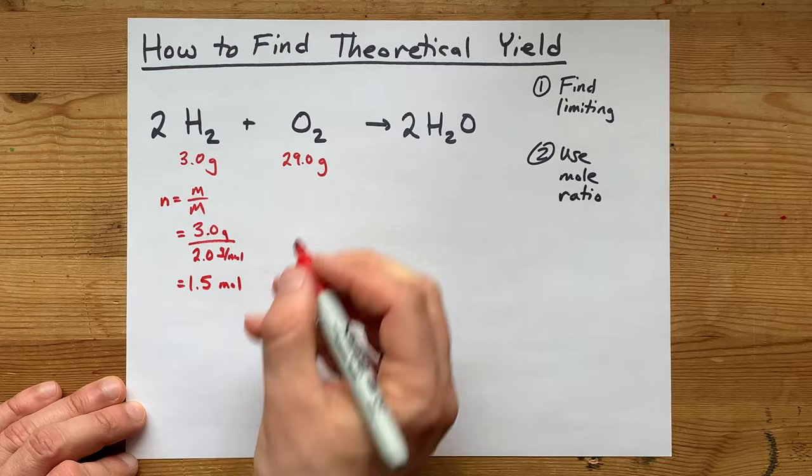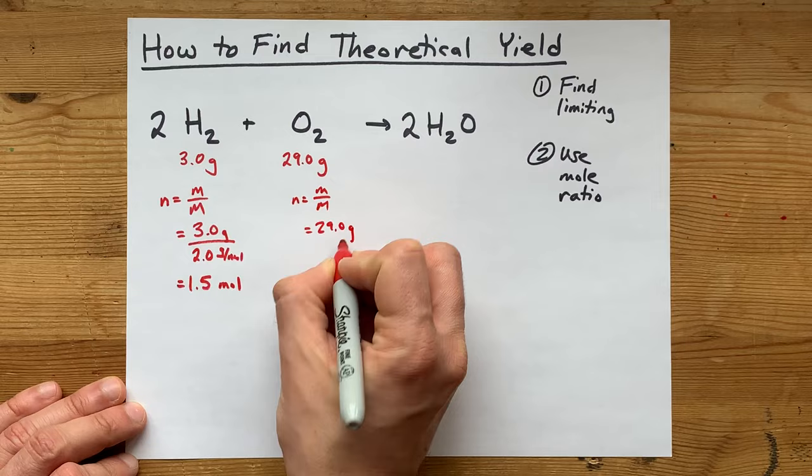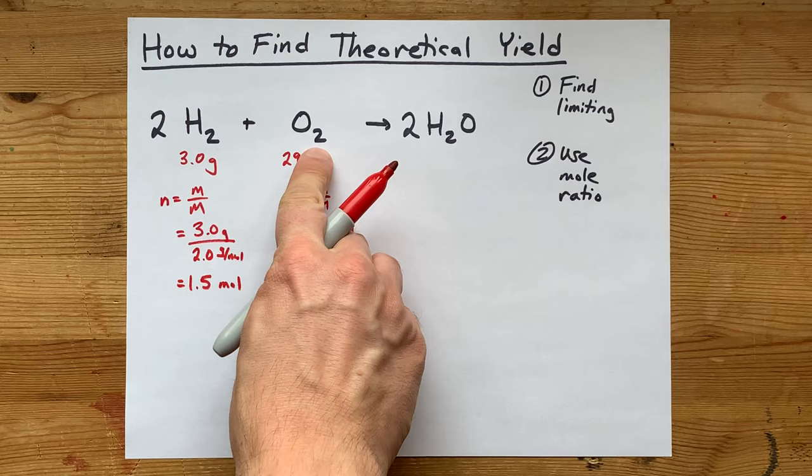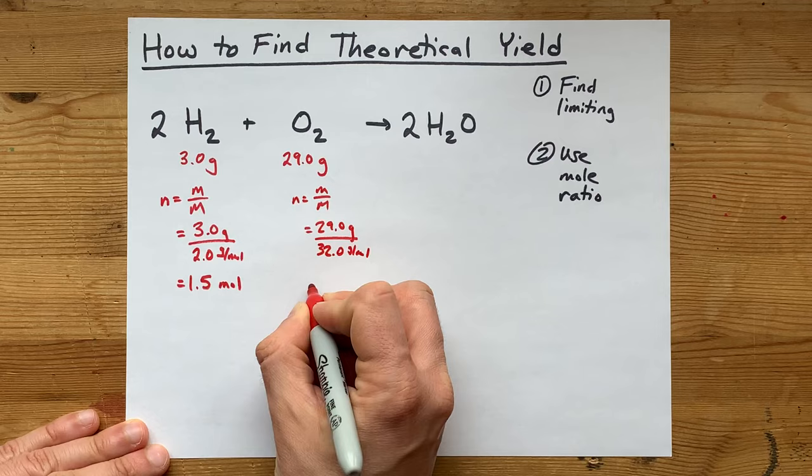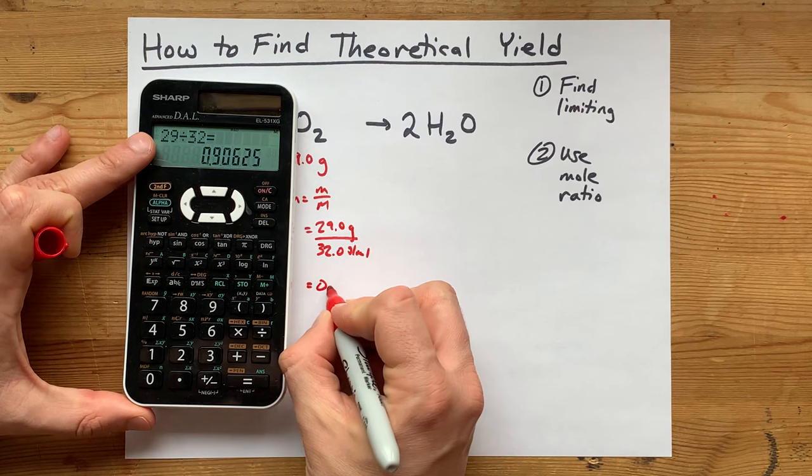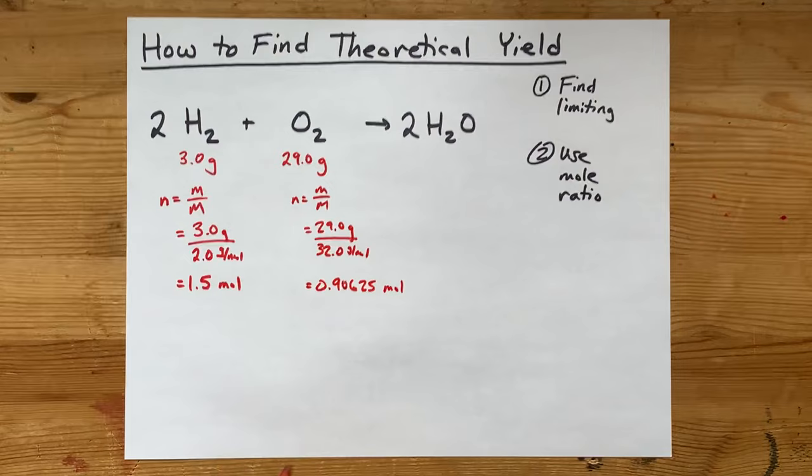Now I'm going to do the exact same for oxygen. Mass divided by molar mass, it's 29 grams divided by—oxygen is 16, there are two of them—so that's 32 grams per mole for oxygen. When you do that on your calculator, you get 0.90625 moles.